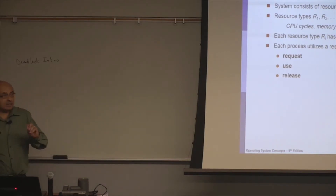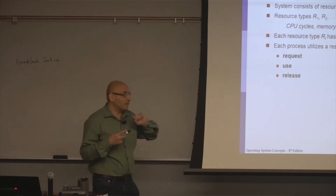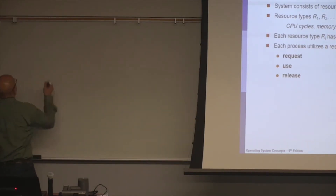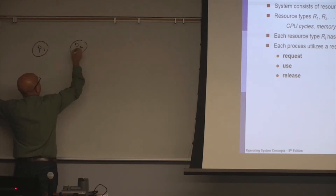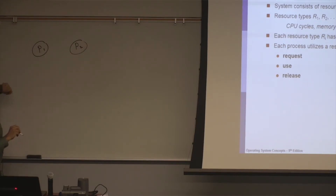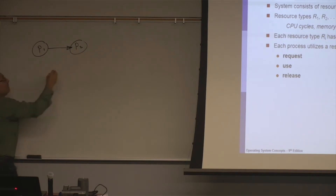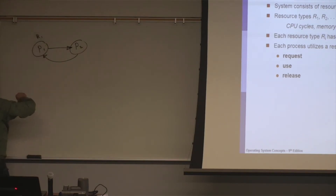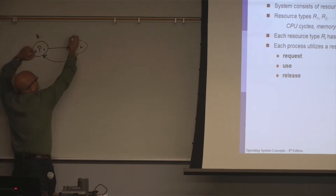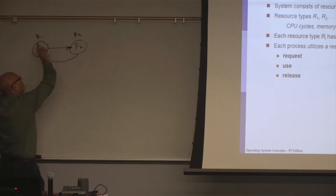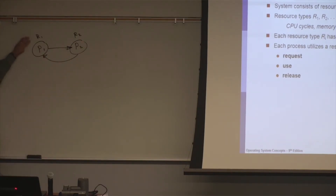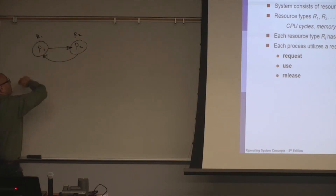Why are they waiting for each other? A process is waiting for another process because that process has some resource that this process needs. In the simplest form of a deadlock, we have P1 and P2. P1 has a certain resource that P2 needs, and P2 has a certain resource that P1 needs. So P1 is holding R1 and waiting for resource R2 held by P2, and P2 is holding R2 and waiting for resource R1 held by P1.